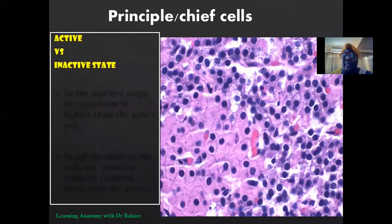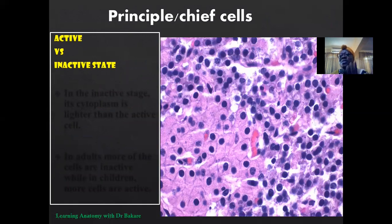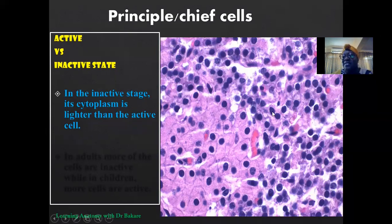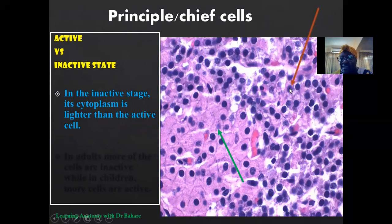More on the chief or principal cell: these are the cells solely responsible for the production of the parathyroid hormone, and they may be active or inactive. This can be a strong tool in determining the efficiency of the parathyroid gland and can be used to evaluate disease conditions. For inactive cells, the cytoplasm is usually light. You can see that this principal cell has a light cytoplasm compared to this other cell that is stained darker — meaning this darker cell is active.